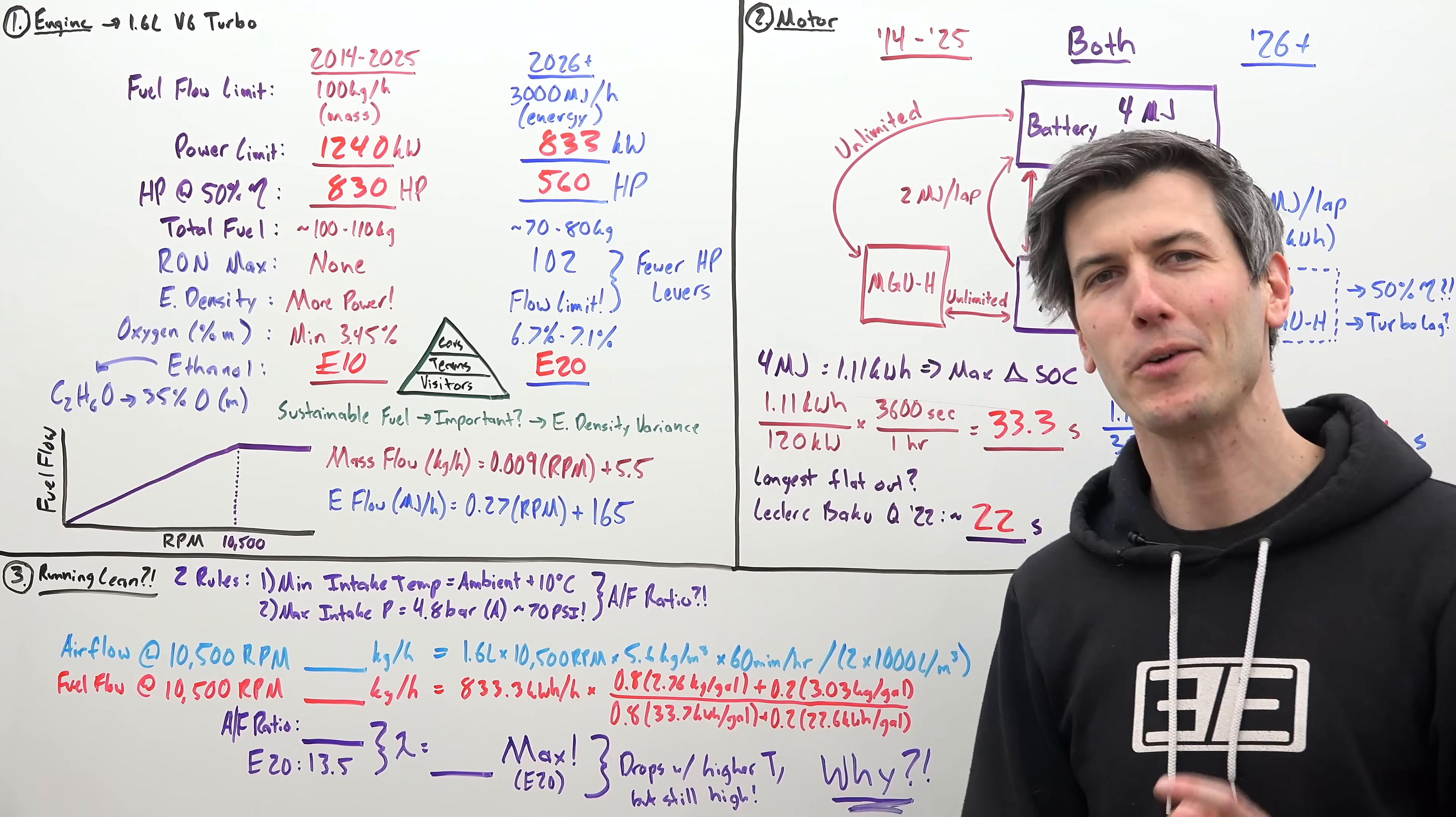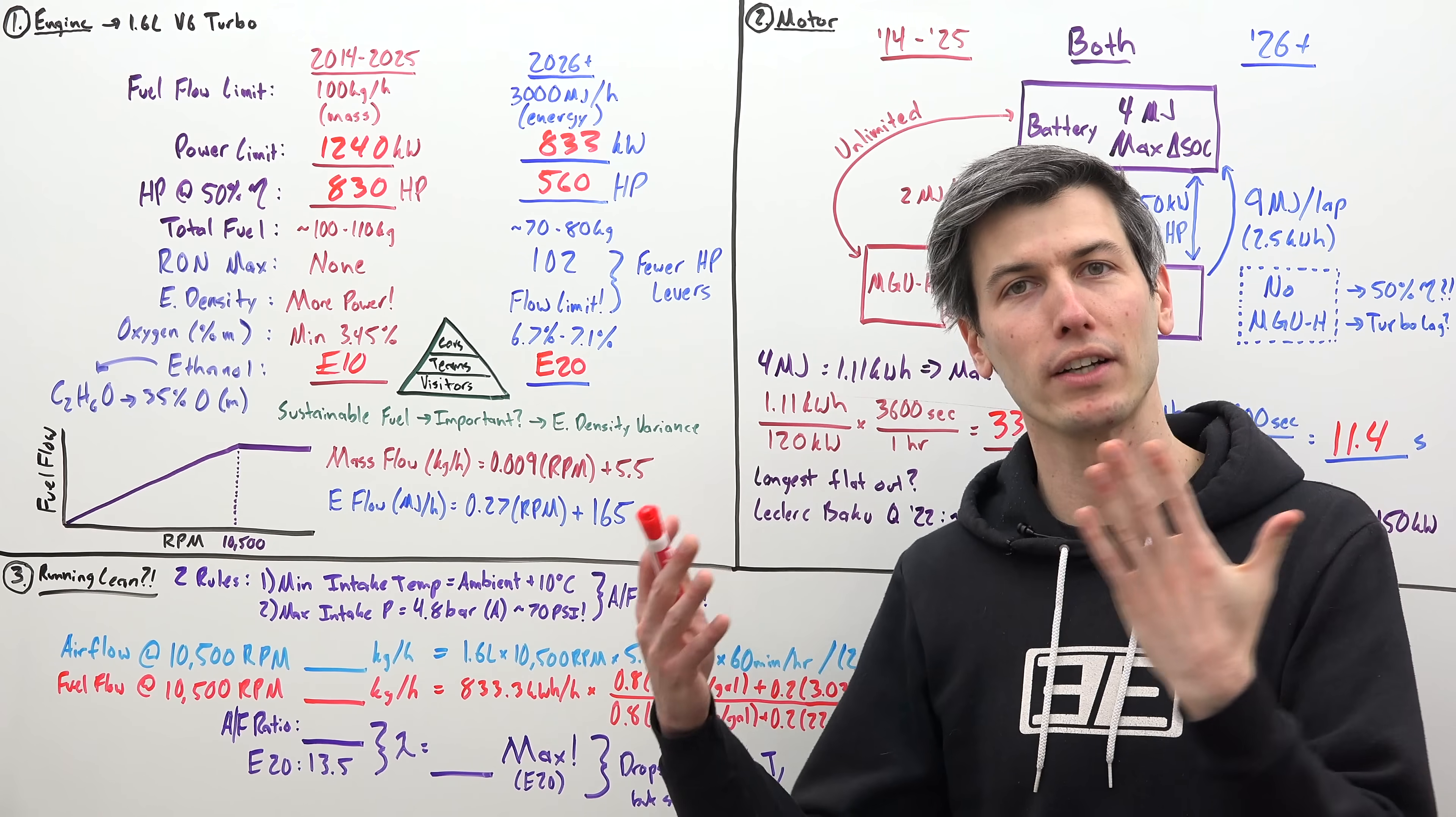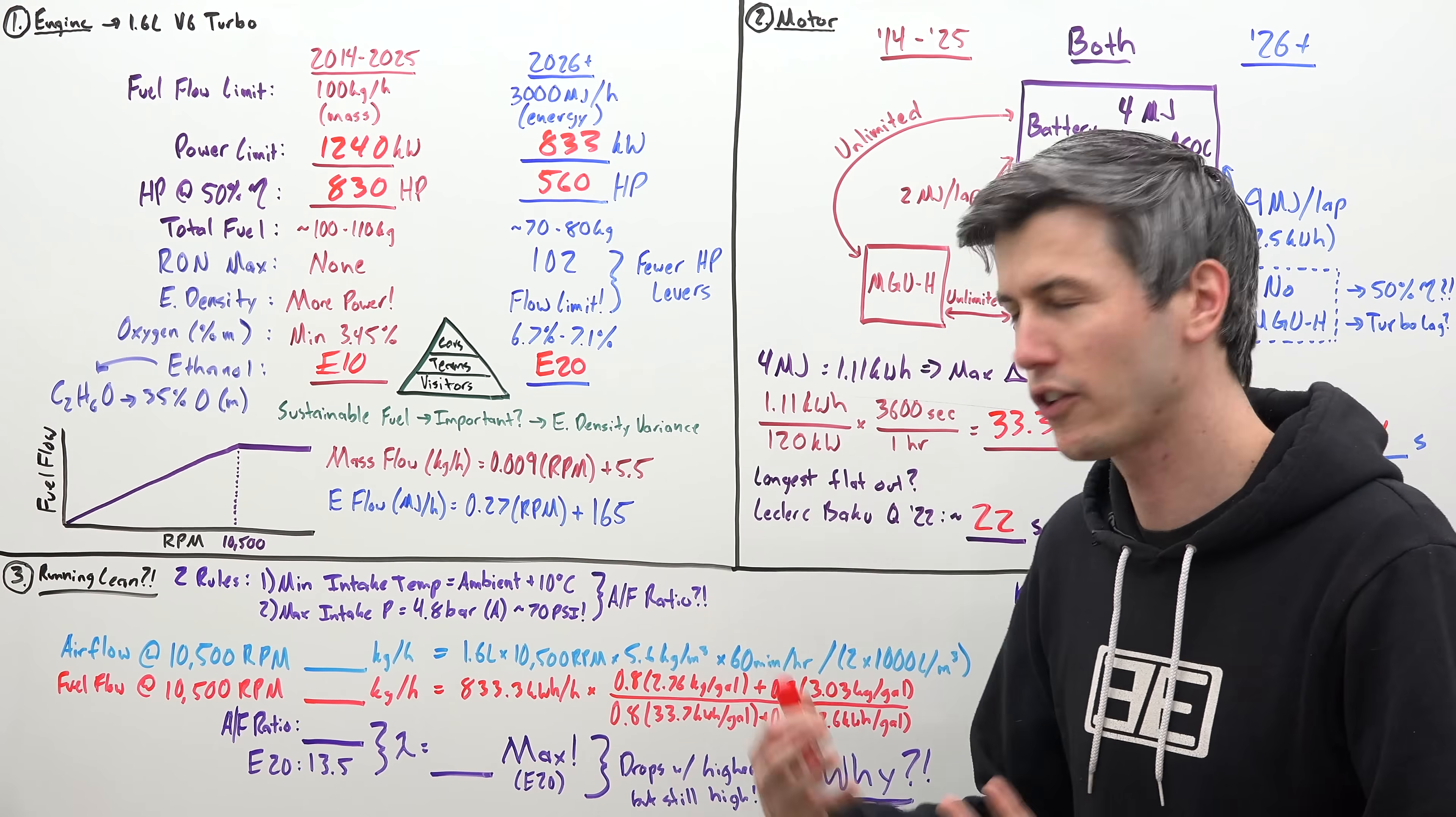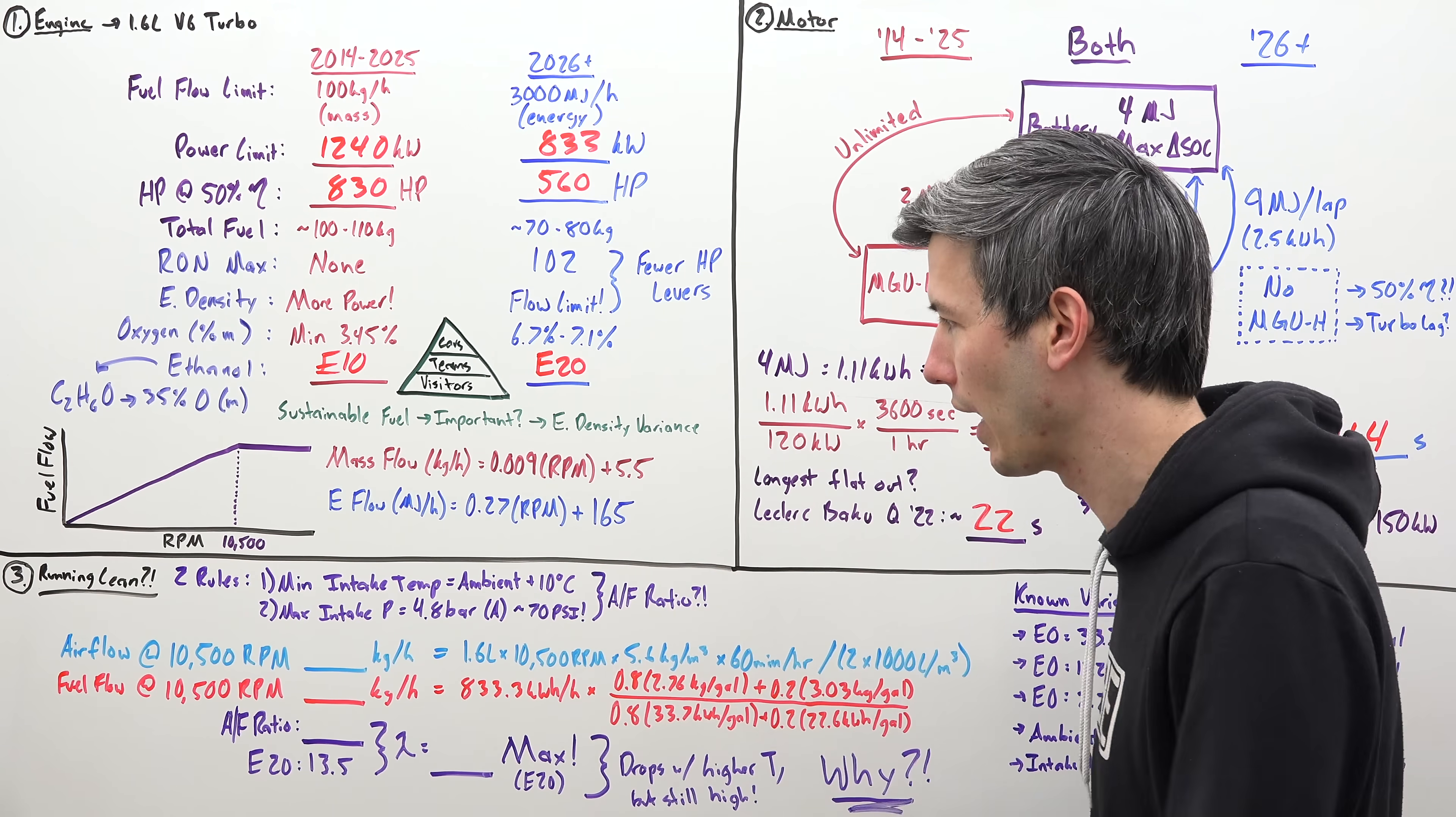I should probably end the video here, but I'm not going to because there's something very perplexing about Formula One engines, and that's that they run gasoline, but they also run very lean. And usually, those two things do not happen together. Gasoline engines don't really like to run lean, especially when you're trying to make a lot of power.